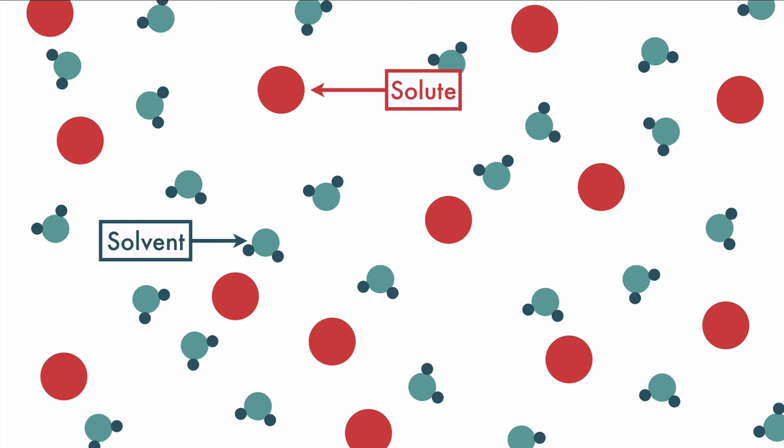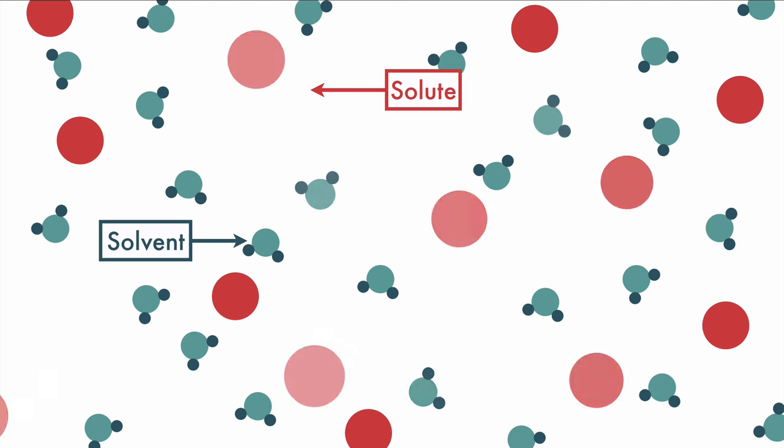Now, unlike Kool-Aid, your cells have a membrane dividing the inside of the cell from the outside of the cell. So we have to be able to describe the internal and external environments. To do that, we'll use three different words to describe the different amounts of solute and solvent that we could come across.